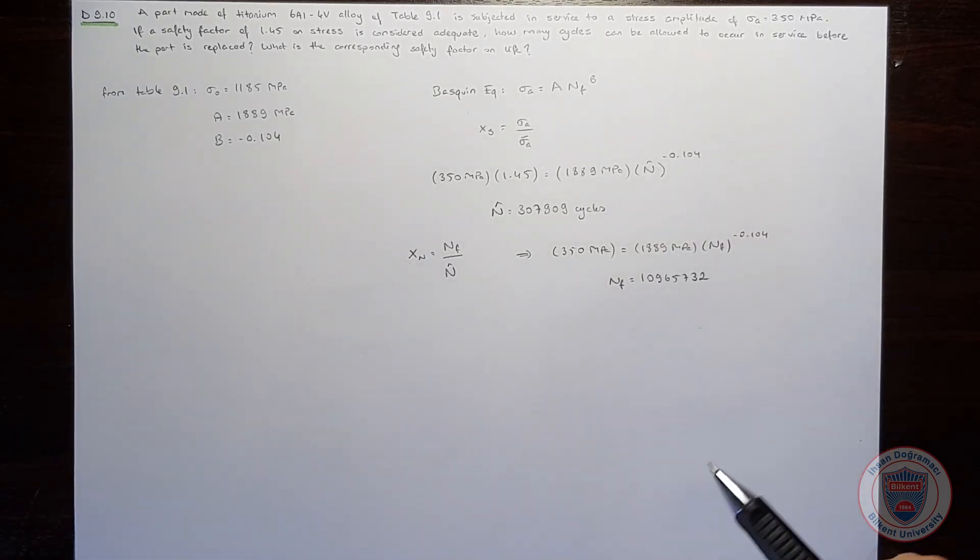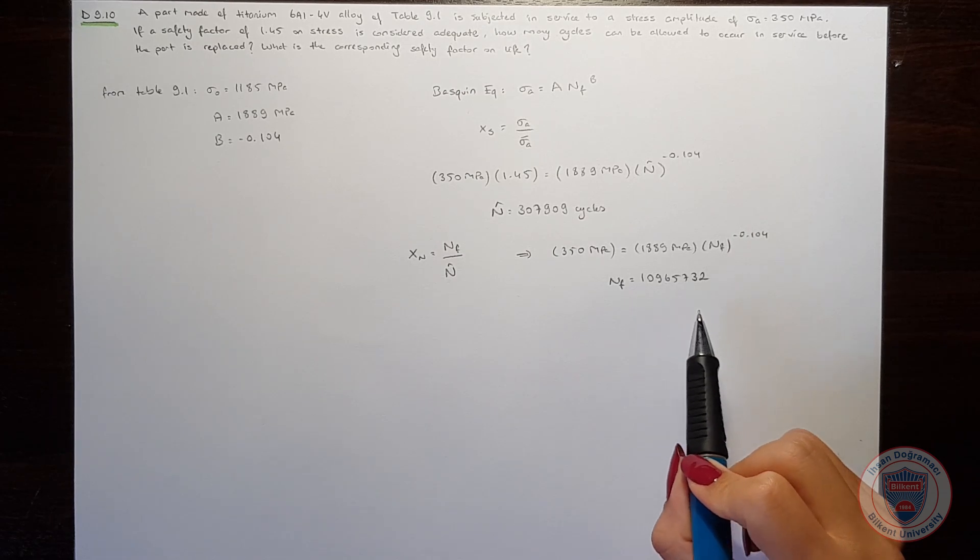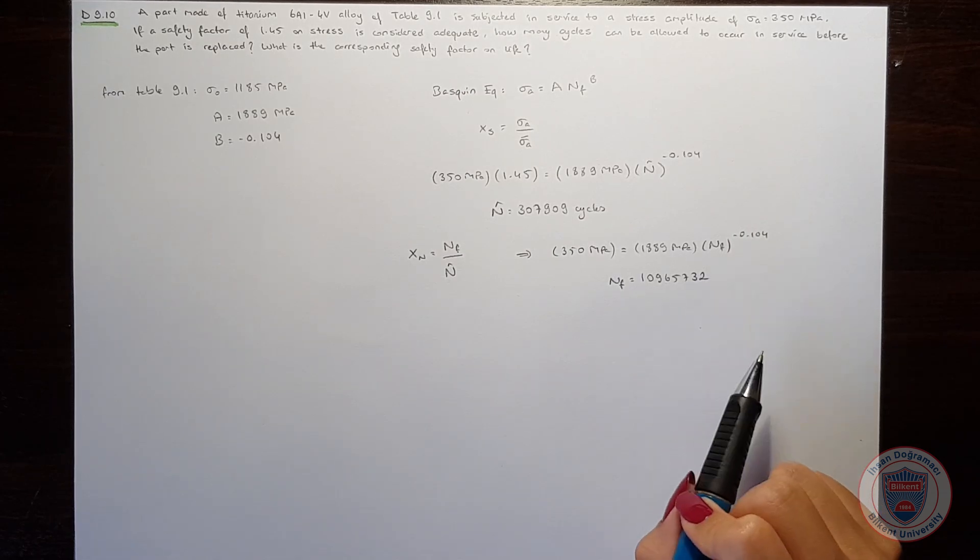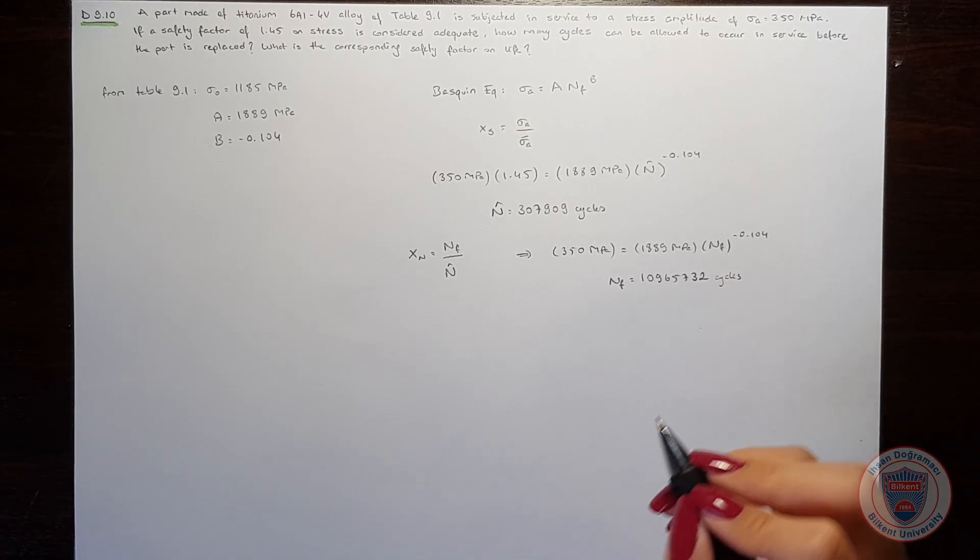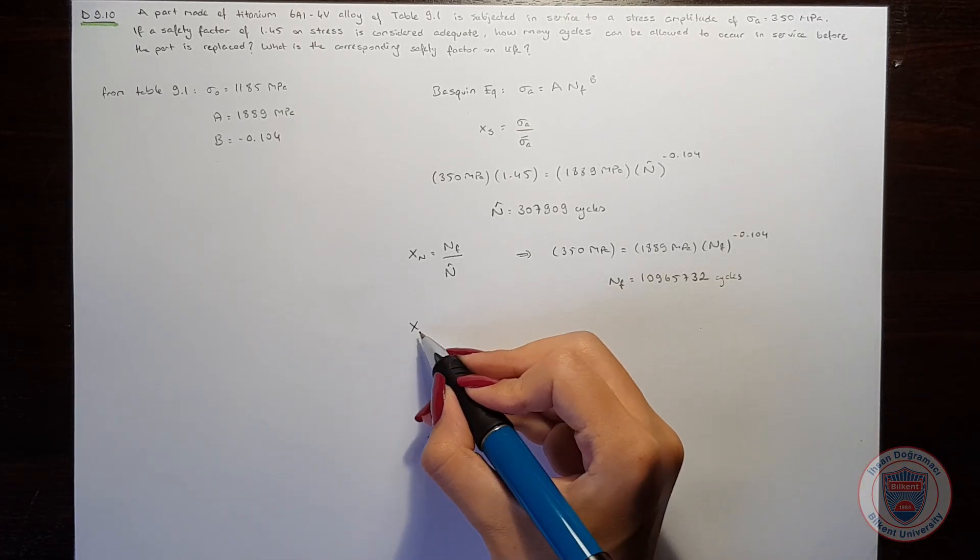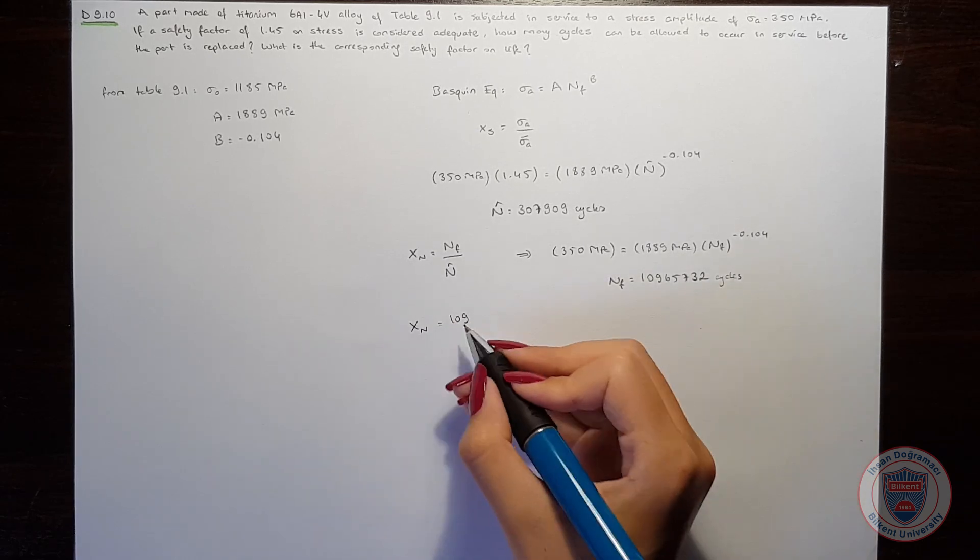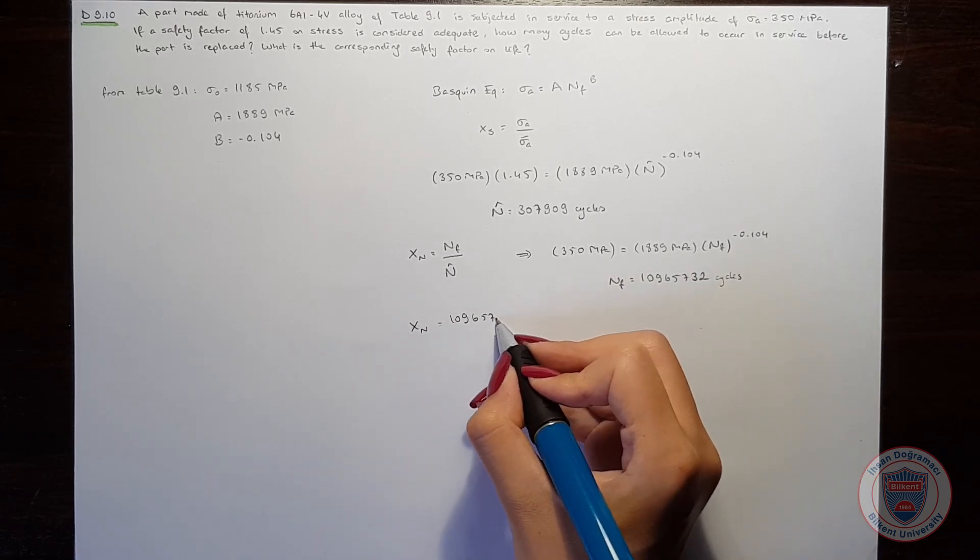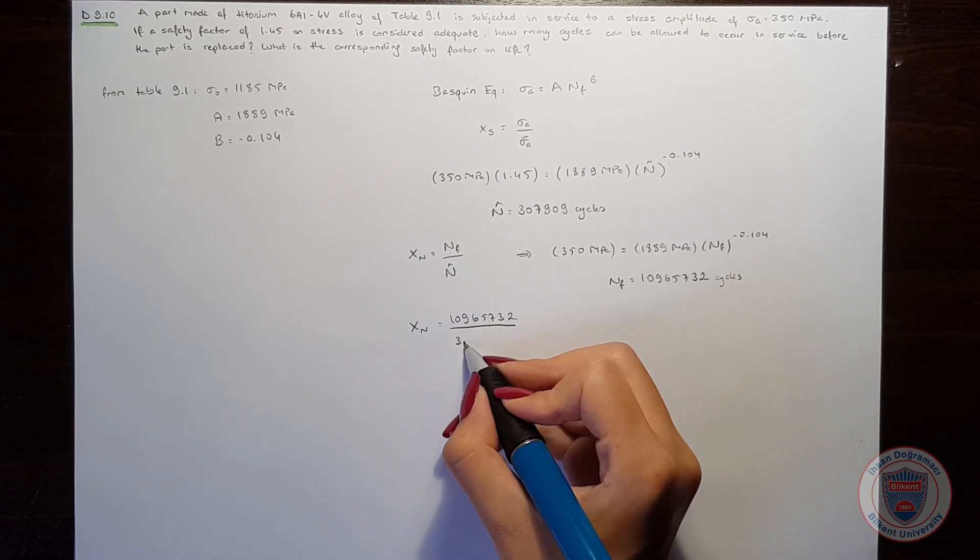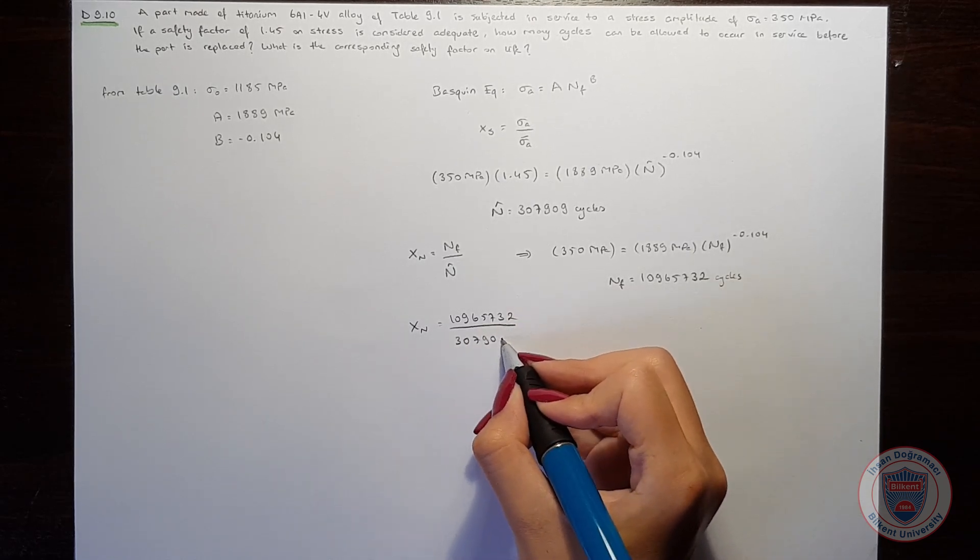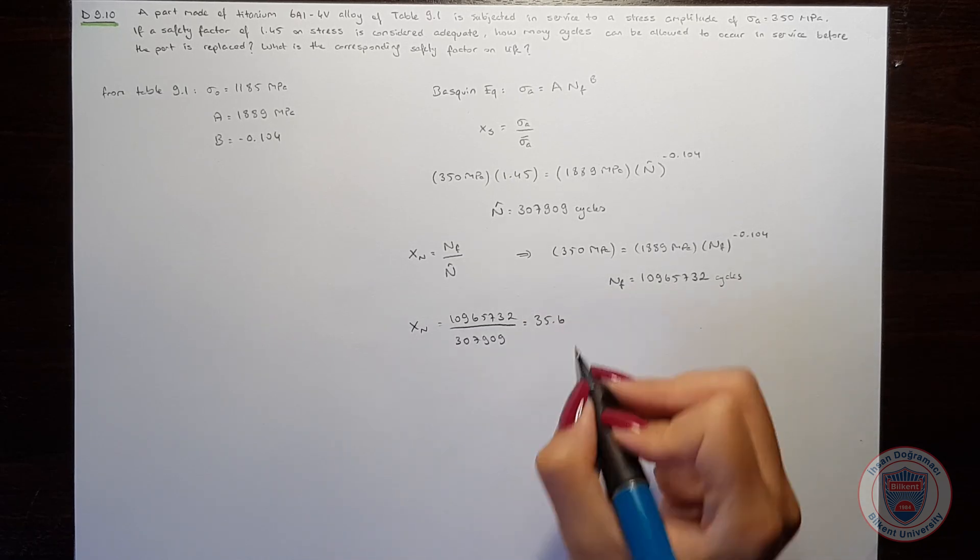nf will be equal to 10,965,732 cycles. Now we can calculate the safety factor on life, and we will obtain 35.6.